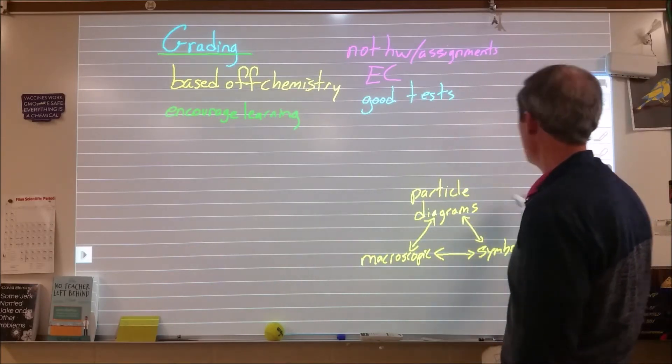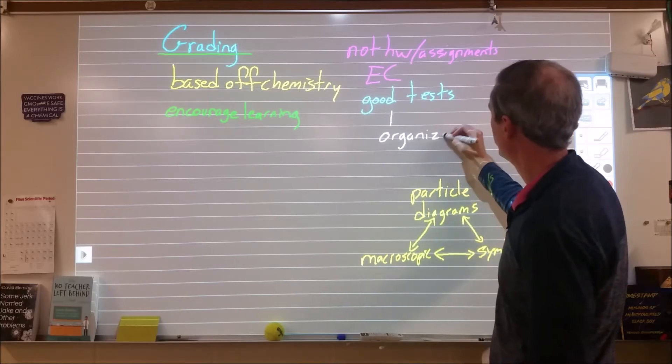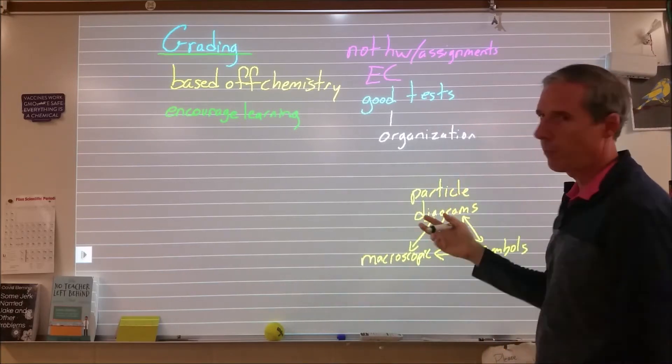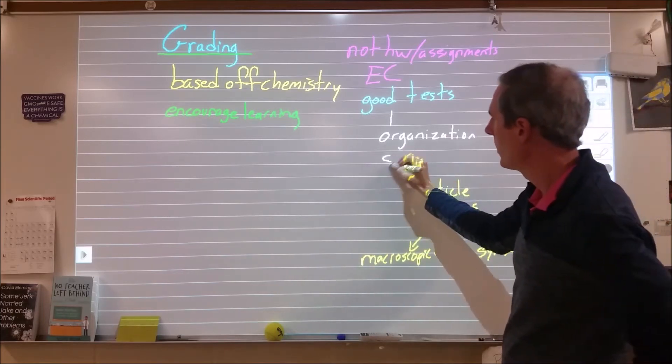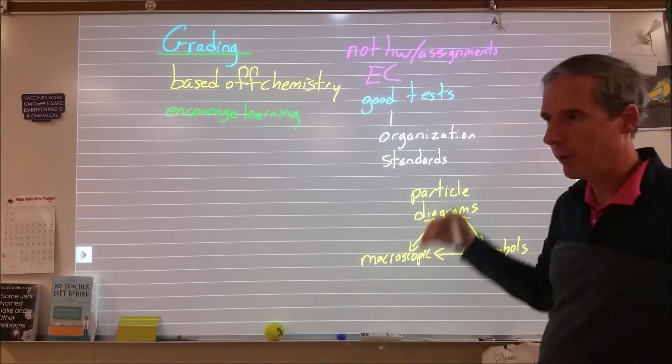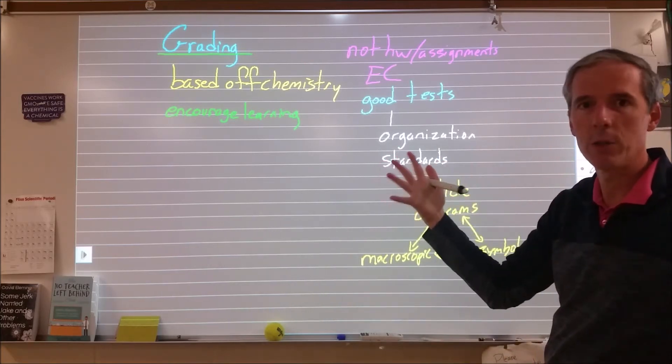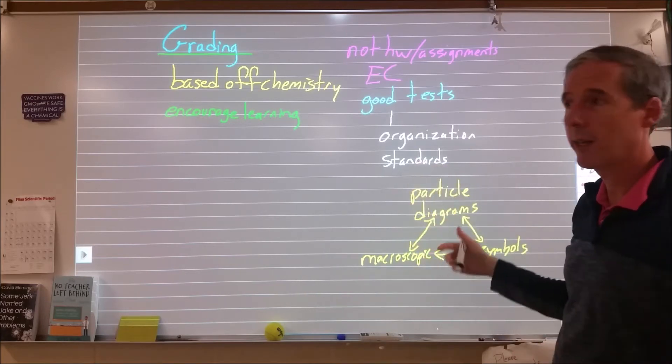So let's talk about what the organization looks like of a good test or a bad test. So if we have an organized test, then we're going to have that organized based on standards. That means that for unit two you have these five things that you should have learned and that's what's going to be on your test. Now there's two ways that that can fall apart.